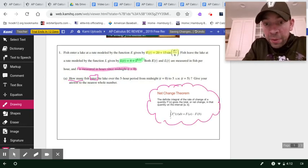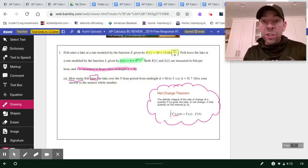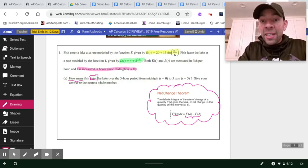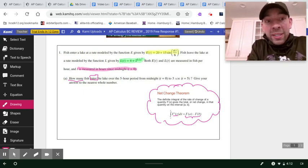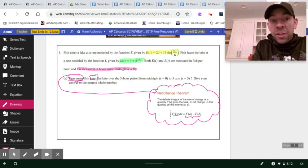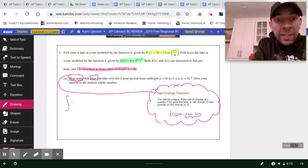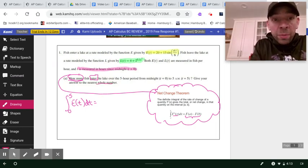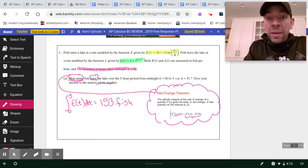They asked me how many, and I think those two little words are really powerful. How many fish entered the lake from midnight until 5 a.m.? This all revolves around the net change theorem. In general sense, we're saying if capital F prime of X is some rate of change, anytime you integrate that rate of change, you are producing or getting the net change in the original function F. So we're going to integrate E of T from 0 to 5. We're going to pop that in our calculator, and we're going to end up with, rounding to the nearest whole number, 153 fish have entered the lake between midnight and 5 a.m.